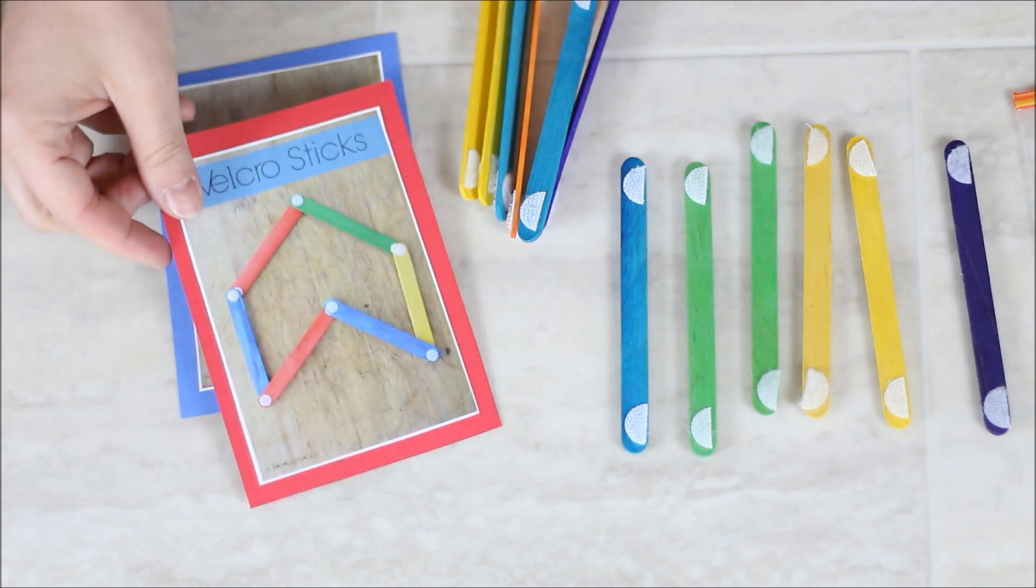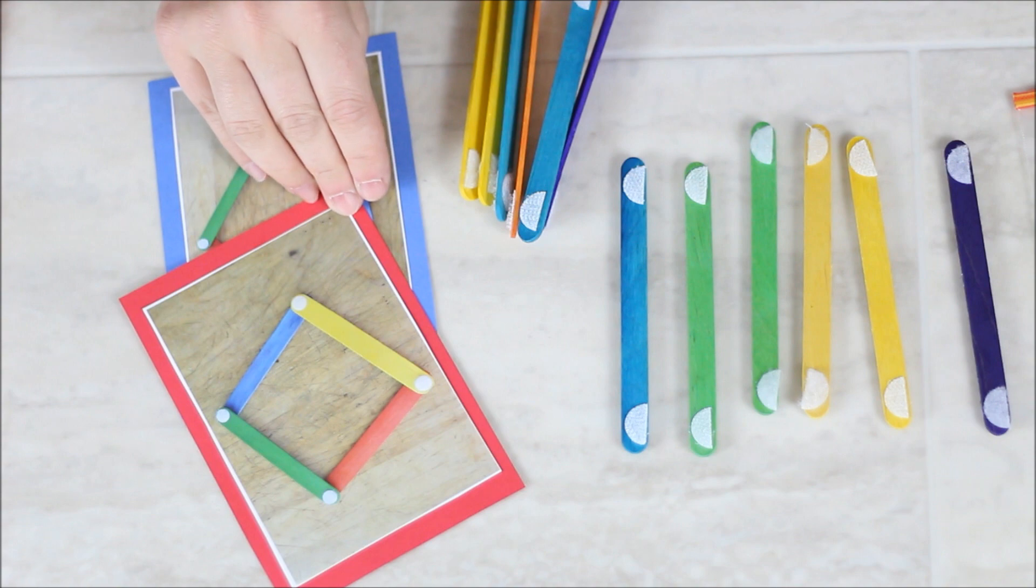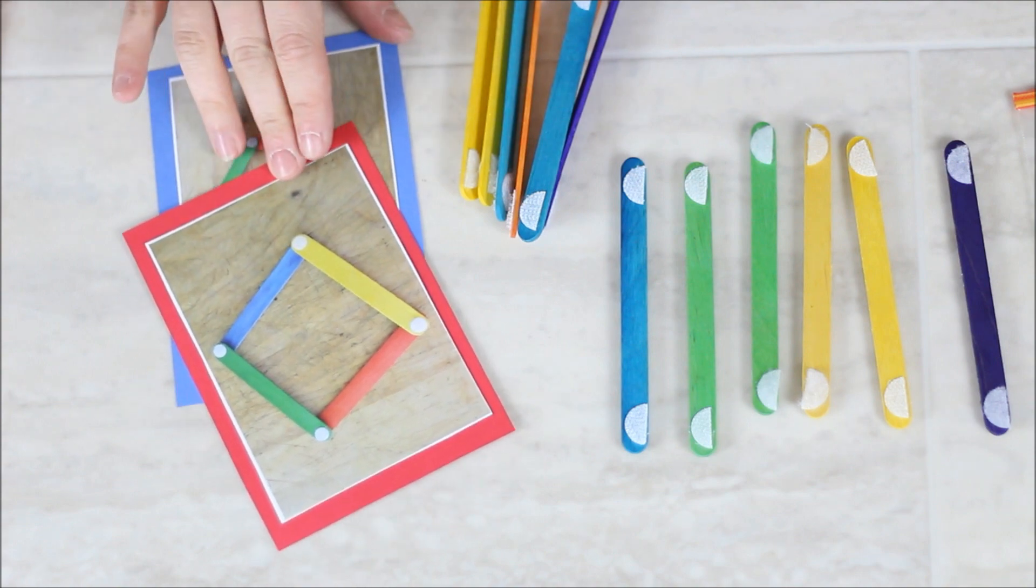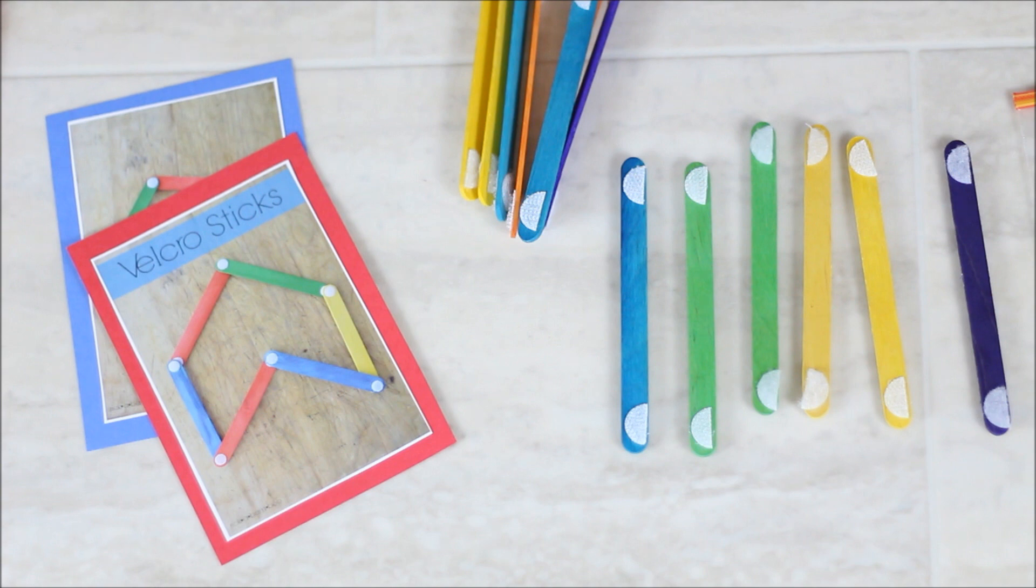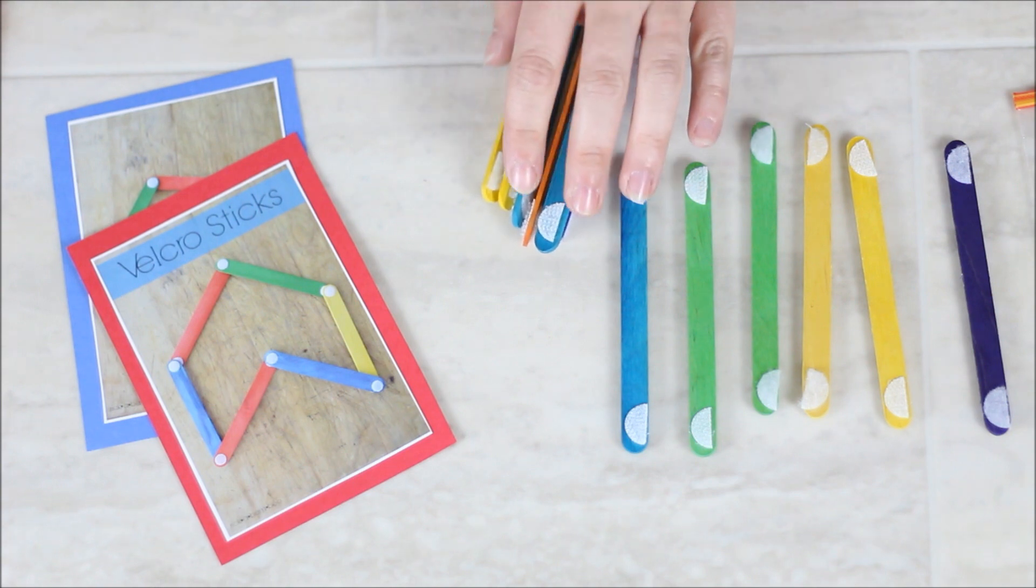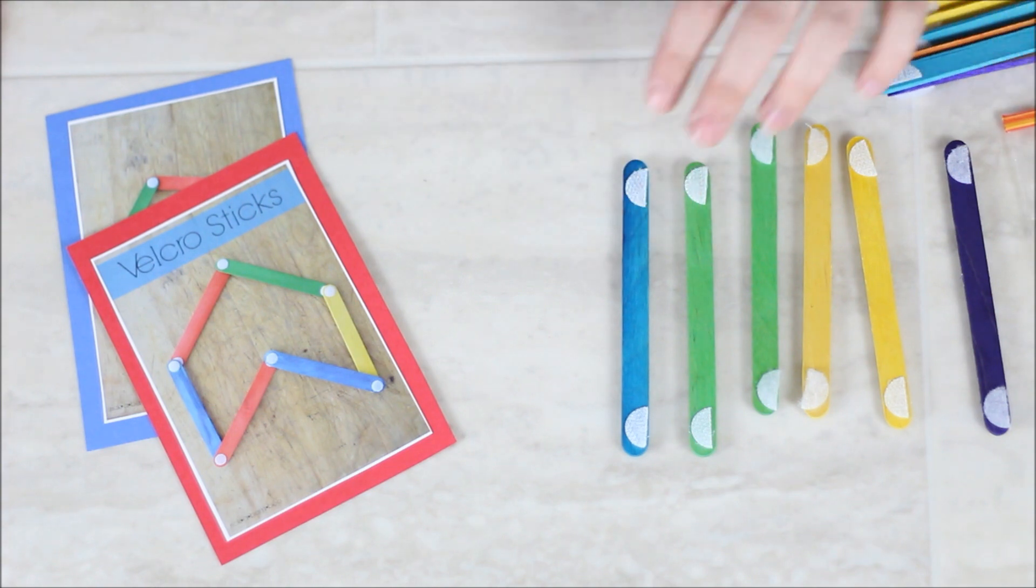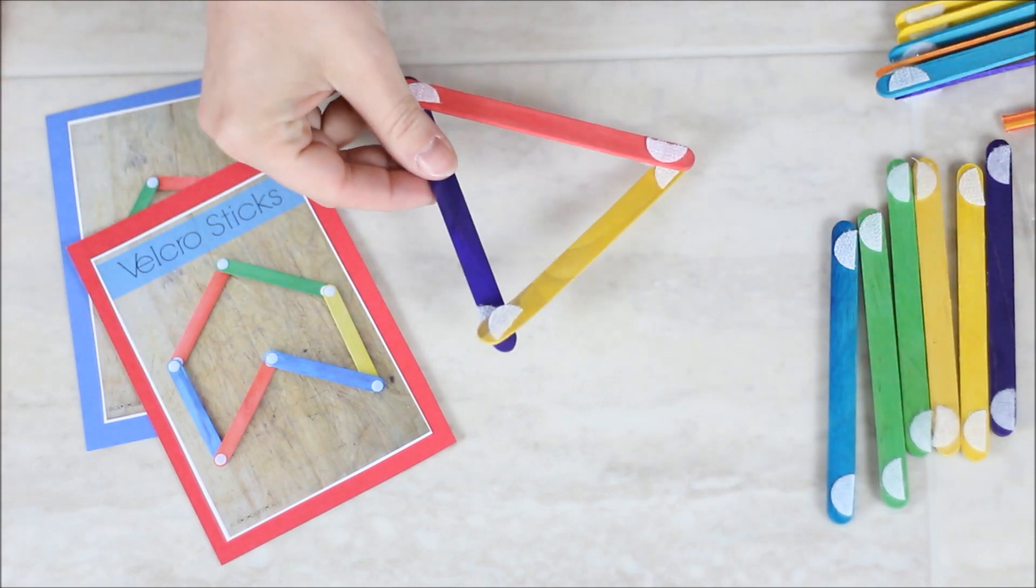You can find lots of different designs of different shapes that you can make, and you can print out some different cards, or you can just let the child create their own shapes. So you can do challenges of asking them, once they're older and start to know their shapes, you know, make me a triangle.